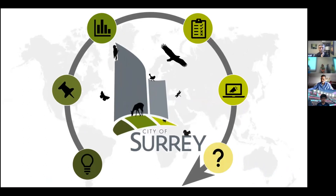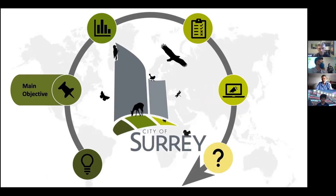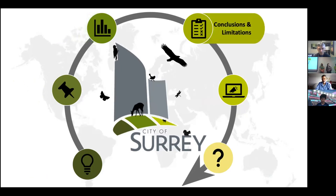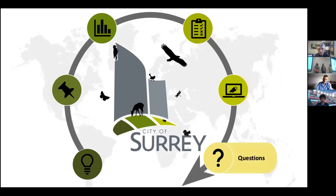Here's what we'll be talking about today. First, I'll give a brief background introduction on biodiversity and some background information you need to know about the city of Surrey. We'll talk about the aims of our project, then get into the results and main findings. We'll also talk about limitations, things we've discovered, some further action we can take in the future, and then there will be a question period afterwards.